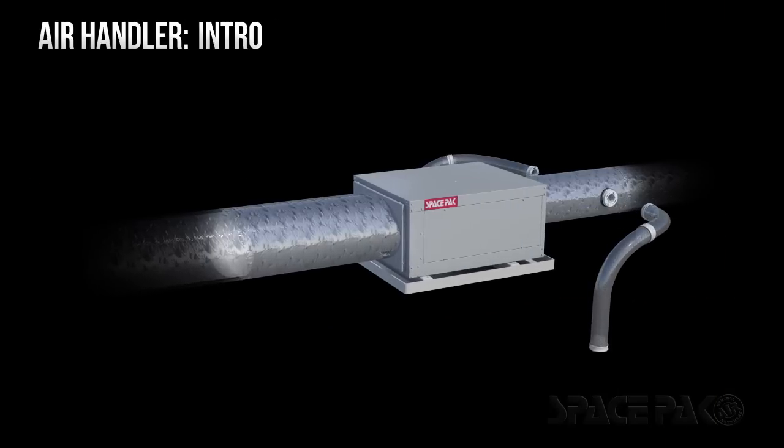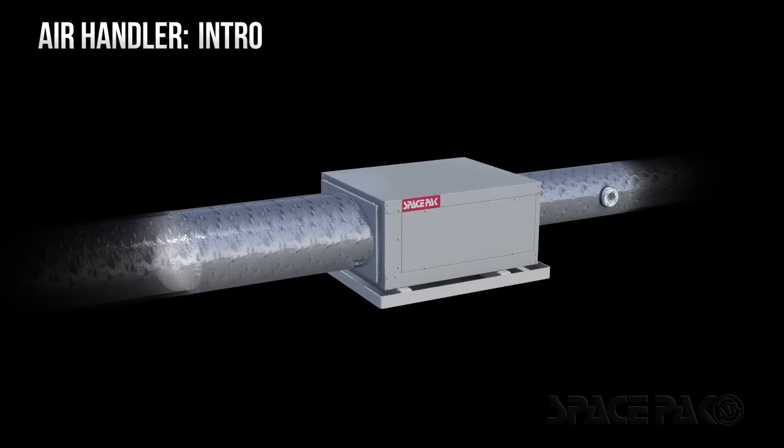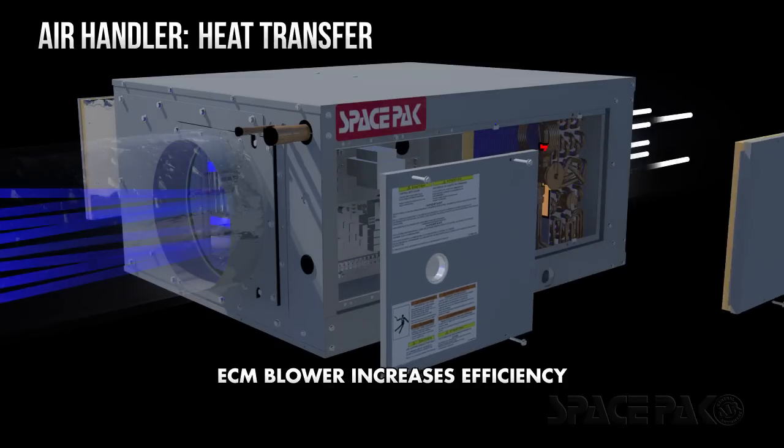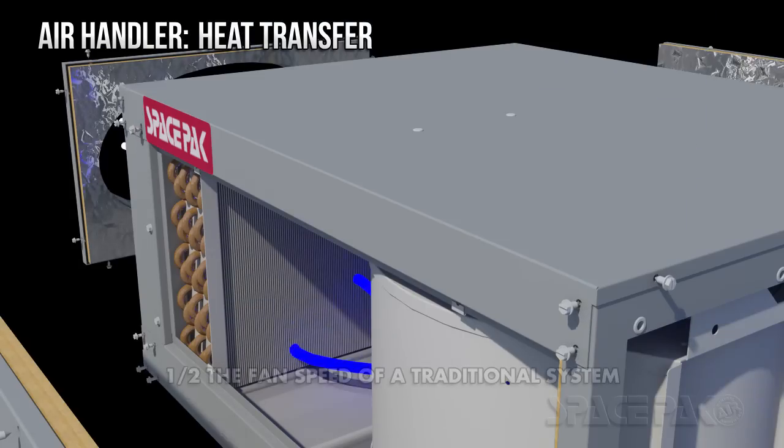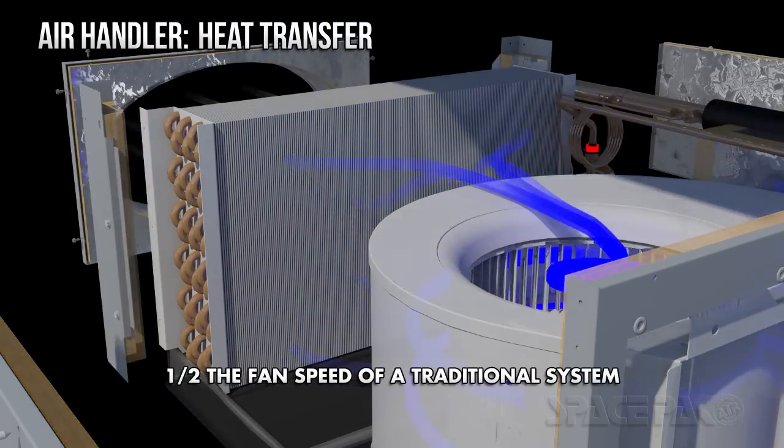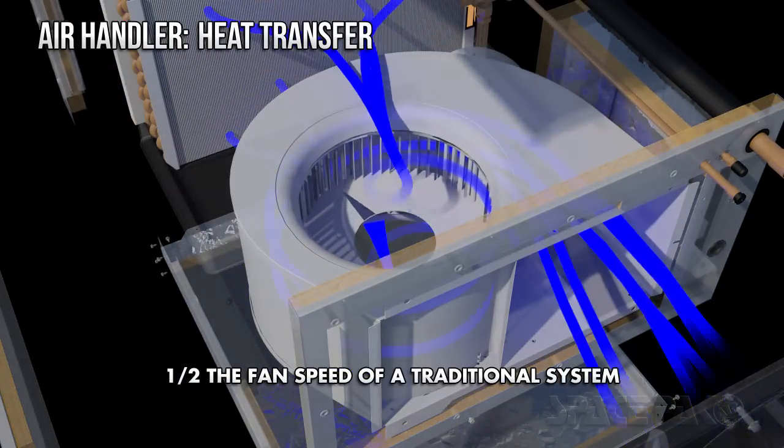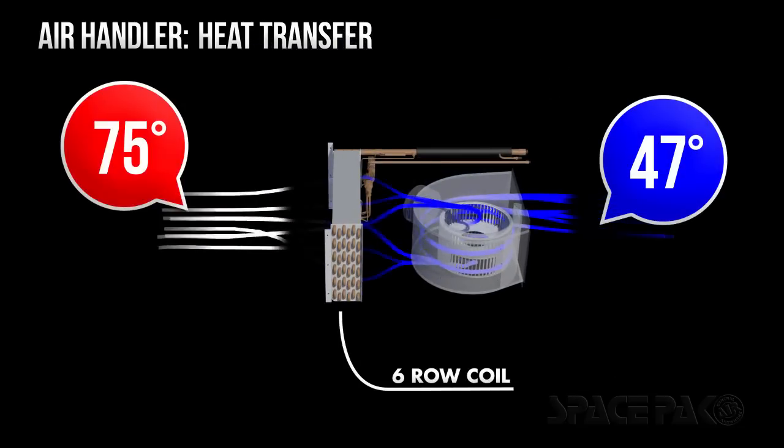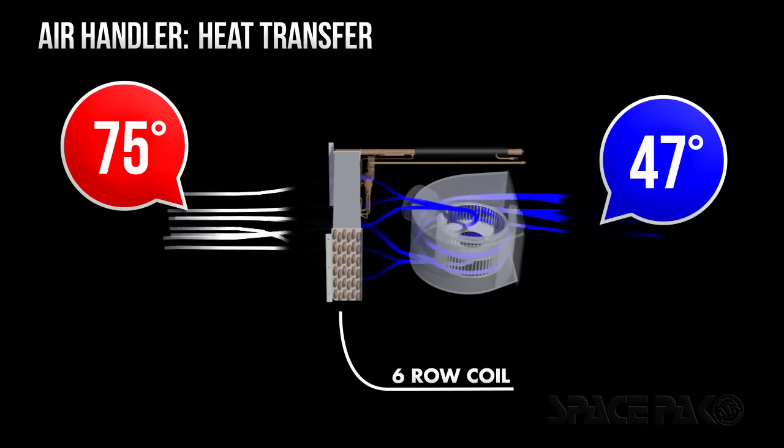Now let's take a look at how a SpacePak system treats air before delivering it to your living space. A SpacePak air handler uses a coil to add or remove heat. The airflow through the air handler moves slower than in a traditional system, ensuring that the incoming air stays in contact with the coil for longer. More time spent transferring energy means SpacePak can provide an up to 28 degree temperature differential across the coil.